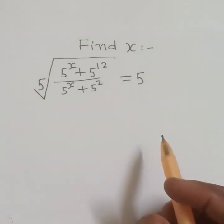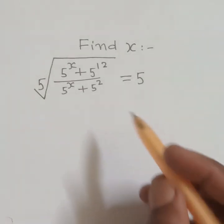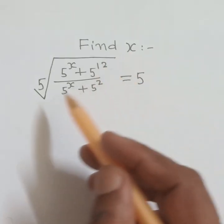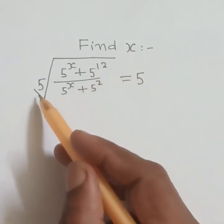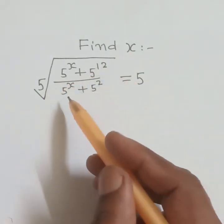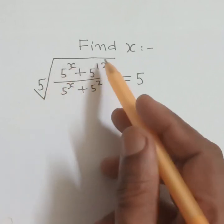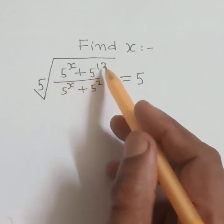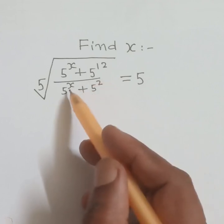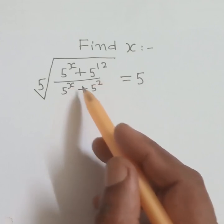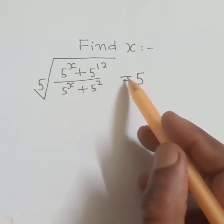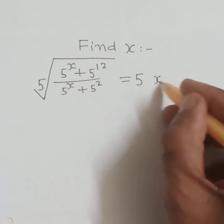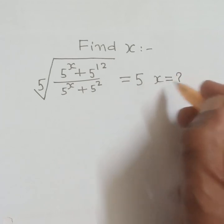Hello, welcome. Let us find the value of x from this equation, which is the fifth root of 5 to the power x plus 5 to the power 12, divided by 5 to the power x plus 5 squared, is equal to 5. What is the value of x?